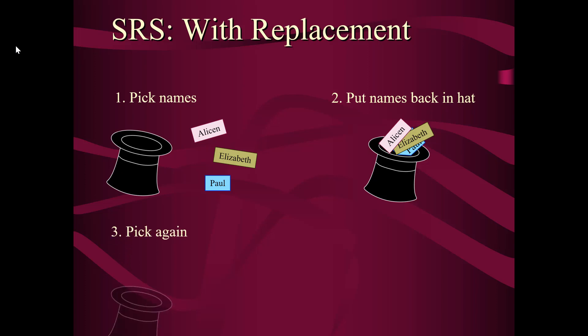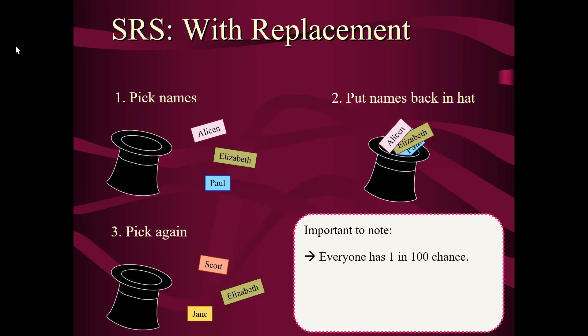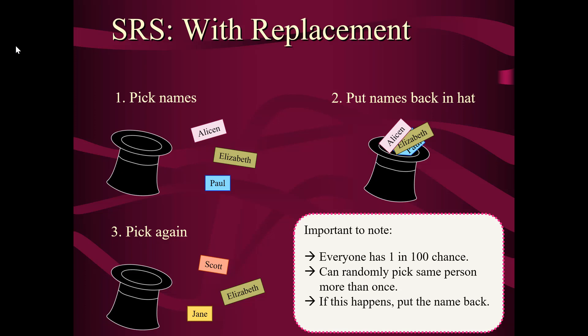And then we would pick again. So this time we might pick Scott, Elizabeth, and Jane. What's important to note here is that everyone has a 1 in 100 chance of being picked. This also means I can randomly pick the same person more than once. If this happens, I just put the name back and pick again. The key is that there's always a list of 100 names in the hat, so everyone has a 1 in 100 chance of being picked.